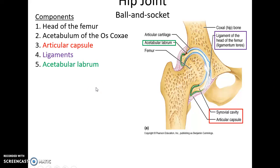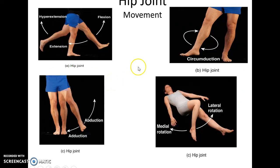The hip joint is another ball-and-socket joint allowing a lot of movement. The head of the femur fits into the acetabulum of the os coxae. There is the articular capsule, various ligaments including one inside the articular capsule, and the acetabular labrum running around the acetabulum. Movement is triaxial: flexion and extension, hyperextension, circumduction, abduction, adduction, and medial and lateral rotation.